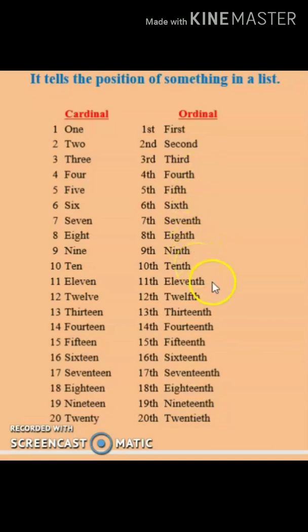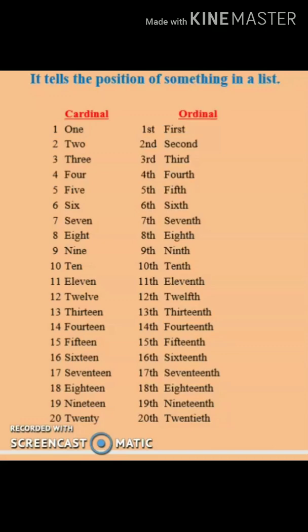Eleventh, twelfth, thirteenth, fourteenth, fifteenth, sixteenth, seventeenth, eighteenth, nineteenth, twentieth. As we can notice, these are almost similar to cardinal numbers, but there is a little difference in the spellings. First, second, and third are a bit different. Other than that, you just have to write the spelling of the cardinal number and add 'th' at the end.